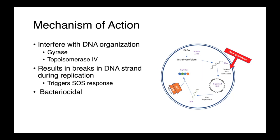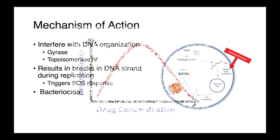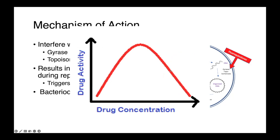Now, one thing that's really interesting about their mechanism of action is that because they kill through a bacterial response to damage, the activity of these drugs actually has kind of a Goldilocks zone. At very low concentrations, the drugs have a low level of activity, perhaps below the minimum inhibitory concentration. But at very high concentrations, the drugs paradoxically are less effective as well. This is thought to be due to reduced transcription and translation of factors that are essentially necessary for bacterial suicide following the DNA interference.